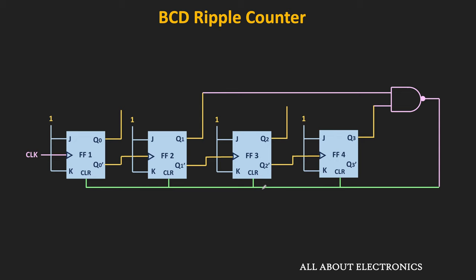This is the circuit of the BCD ripple counter. The Q3 and Q1 outputs are connected to the NAND gate, and the output of the NAND gate is connected to the clear input. With this circuit, the counter will count from 0000 to 1001.